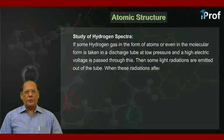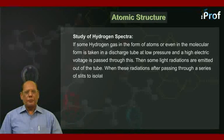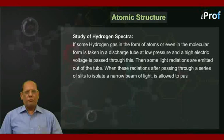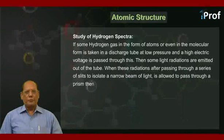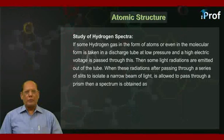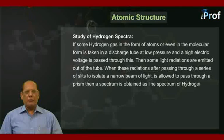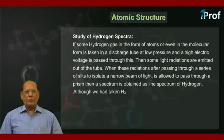When these radiations, after passing through a series of slits to isolate a narrow beam of light, is allowed to pass through a prism, then a spectrum is obtained as line spectrum of hydrogen. Although we had taken H2 molecules,